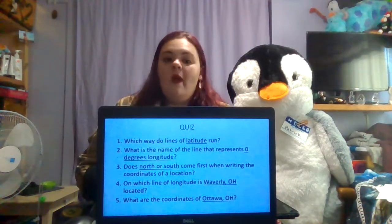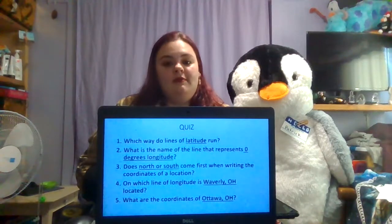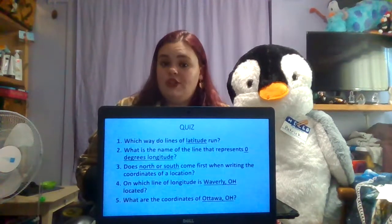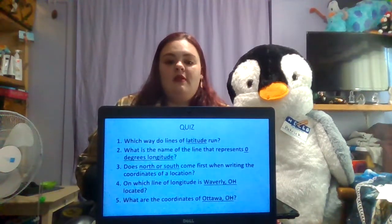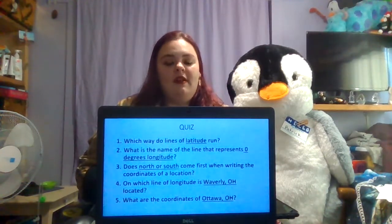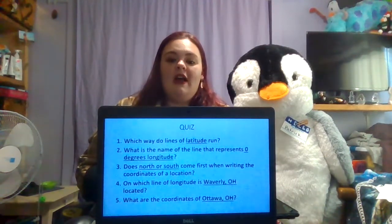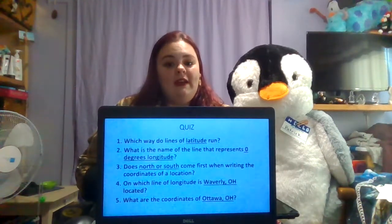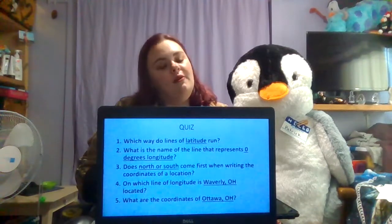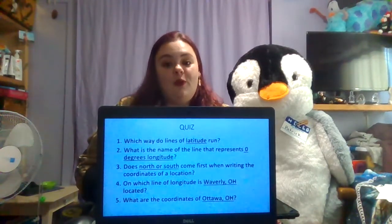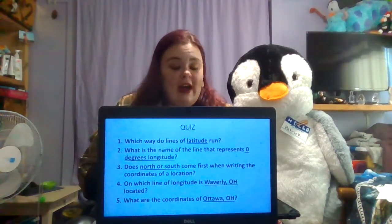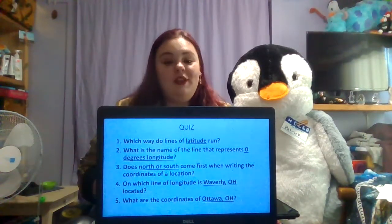I'm going to read the quiz questions to you and then you may begin. Question one: which way do lines of latitude run? Question two: what is the name of the line that represents zero degrees longitude? Question three: does north or south come first when writing the coordinates of a location? Question four: on which line of longitude is Waverly, Ohio located? Question five: what are the coordinates of Ottawa, Ohio? For the last two, please refer to your Ohio map handout. You may begin.